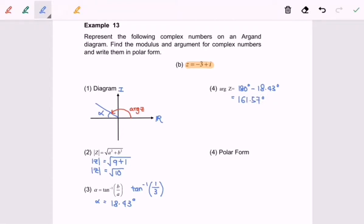As I mentioned earlier, argument of z must be expressed in the form of radian. In this case with the help of the calculator we have 2.82. Do remember, give your answer in three significant figures.